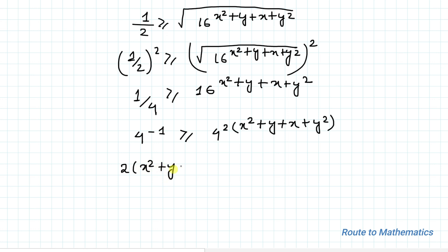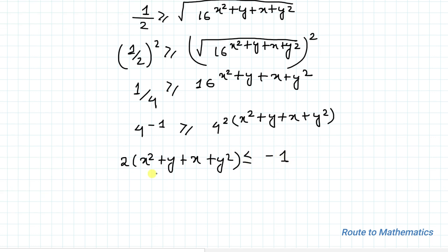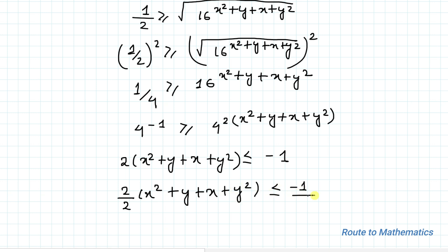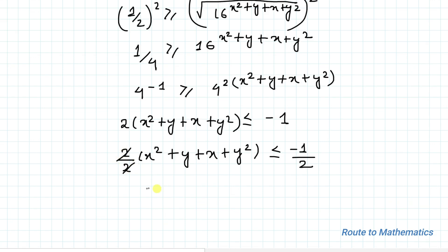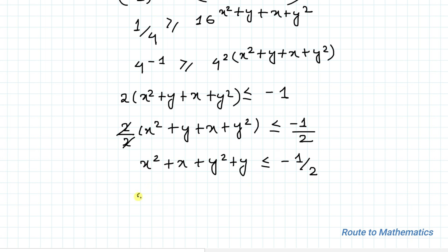Dividing both sides by 2, we get x² + y + x + y² less than or equal to negative 1/2. The 2s cancel out, so we have x² + x + y² + y less than or equal to negative 1/2.